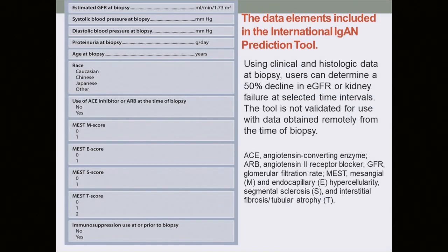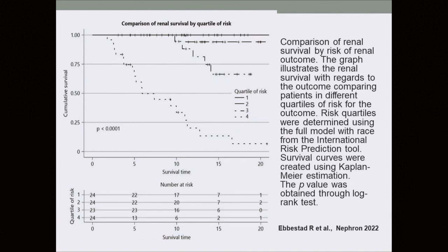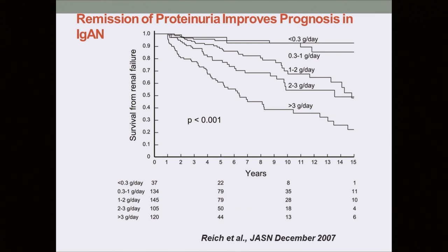The IGA prognostic tool considers clinical parameters such as hypertension, blood pressure at presentation, proteinuria at time of biopsy, eGFR at time of biopsy, treatment history including use of RAAS blockade or immunosuppressives, and histological features using MEST-C classification (with crescents excluded due to limited data). The most important prognostic factor is proteinuria — even proteinuria above 0.3g, and especially above 1g, is significantly associated with worse outcomes over 15 years. Therefore proteinuria reduction is our primary treatment target.